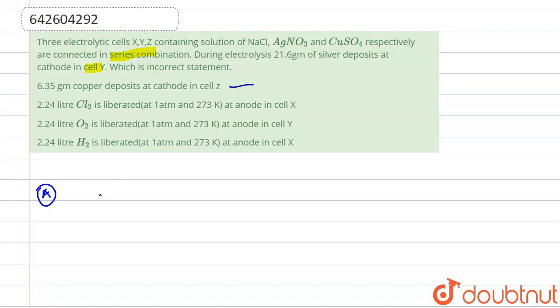It says that equivalent of any metal, w upon equivalent weight, is equals to i into t upon 96500. If we are connected in series, there will be same amount of electricity will flow. So let us see for Ag.